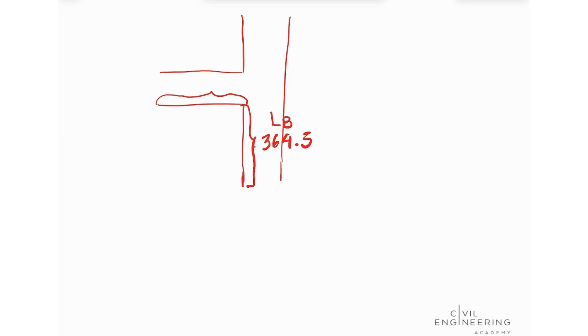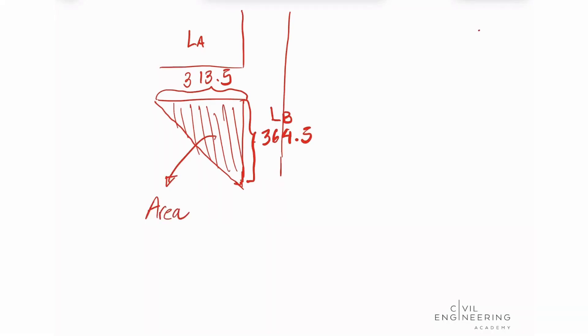So basically, we have that our triangle is, so let's make a sketch here for a second. We have, let's say this is our intersection. And then we have that this side length is 364.5 and this is our LB and this is our LA which is 313.5. With that, we can build our side triangle here and we can estimate the area. So our area is going to be 313.5 times 364.5 divided by 2 and we're going to see that our triangle area is going to be 57,135.37 square feet.